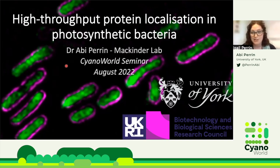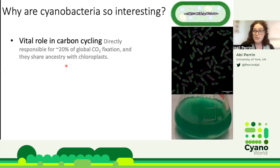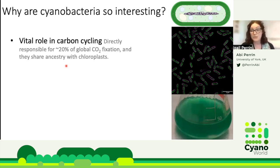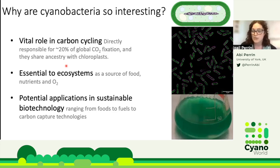I sometimes like to remind myself why cyanobacteria are so interesting. We know that cyanobacteria have a vital role in global carbon cycling and may perform about six percent of the world's photosynthesis. We also share some common ancestry with chloroplasts, which are traditionally very difficult to study, so what we learn about cyanobacteria could be translatable to understanding photosynthesis in some of the world's most important crop plants. Cyanobacteria are also absolutely essential to our ecosystems and may be essential in future as part of more sustainable bio-industries.